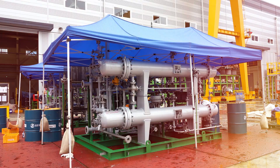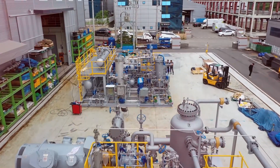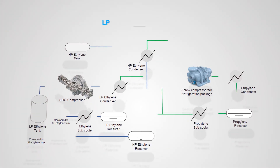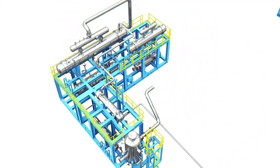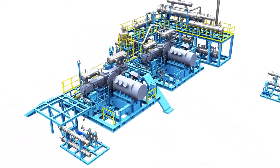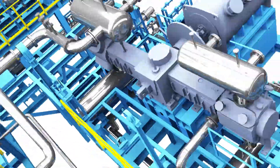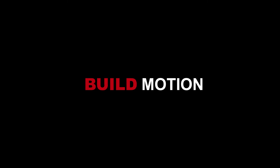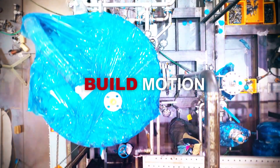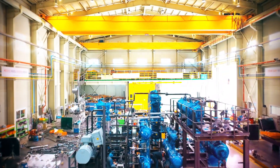Therefore, one of our key technologies is the BOG compressor system package, which recovers BOG back into the storage tank by boosting it to the most efficient pressure level through compression and then re-liquifying the gas through a heat exchange with the refrigerant supplied from the refrigeration system. The ethylene BOG liquefaction package consists of a cascade refrigeration system with an ethylene reciprocating compressor and a propylene screw. The video shown here is the fieldwork process of the BOG compressor system package that we have been manufacturing for a long time.